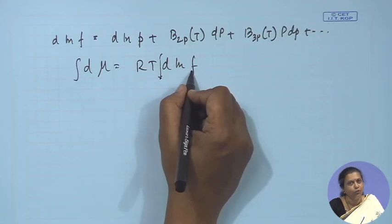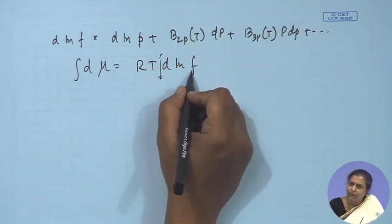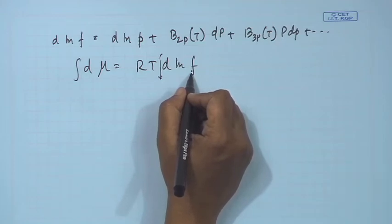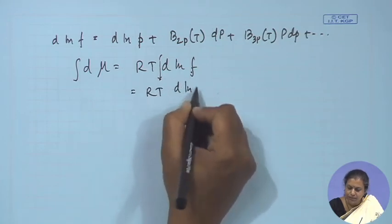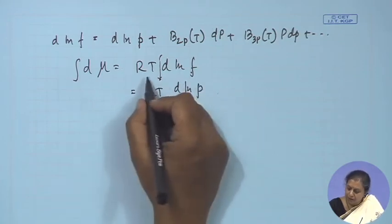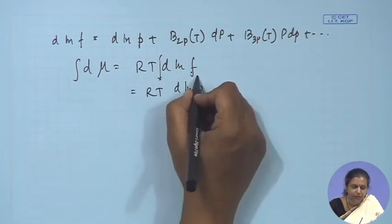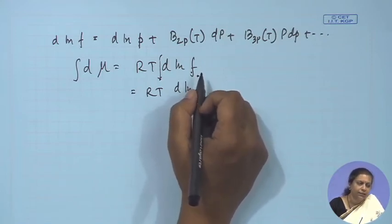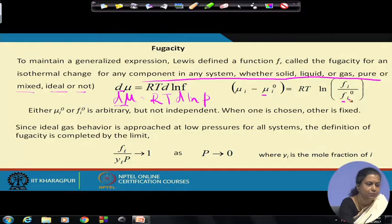We know the value of fugacity at very low pressure, under which condition all substances can be assumed to be in the gaseous state. At such low pressure a gas behaves as an ideal gas, and under that condition the equation reduces to d ln p. Therefore the definition of fugacity is not complete unless we specify the limiting condition of fugacity, which is suggested in the following form.